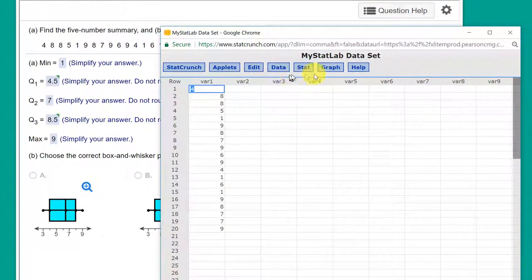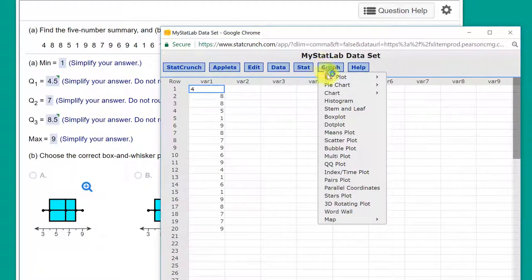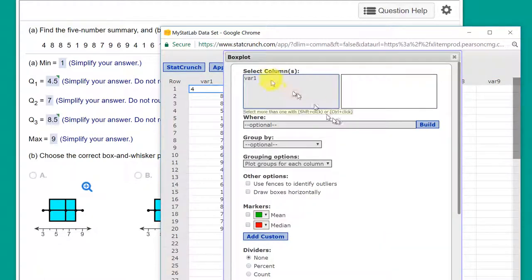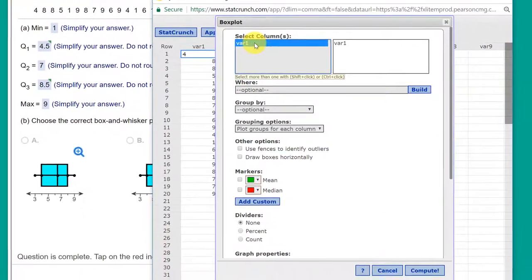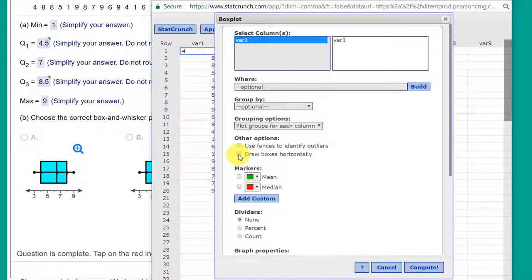We've got our data in there and we're going to go to graph, look for box plot. We're going to select our data, variable one. We're going to draw the boxes horizontally and that's all we need.